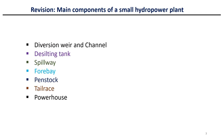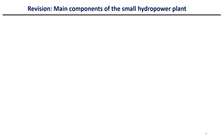The main components are diversion weir and channels, de-silting tank, spillway, forebay, penstock, tailrace, and powerhouse. A few more component details we must know while designing a hydroelectric power plant.